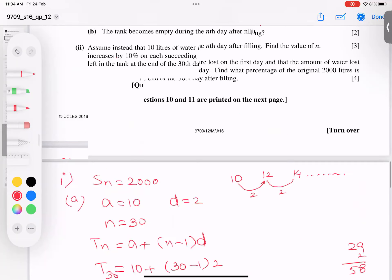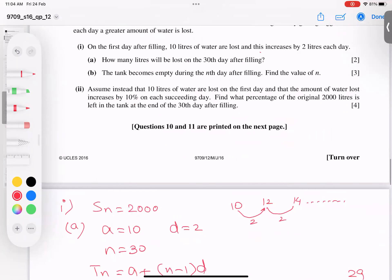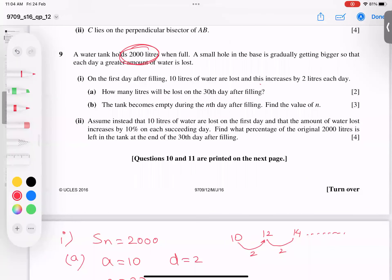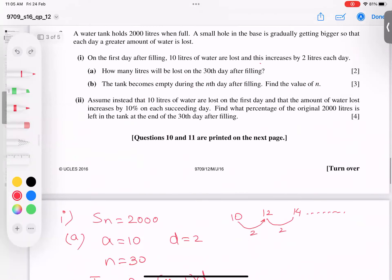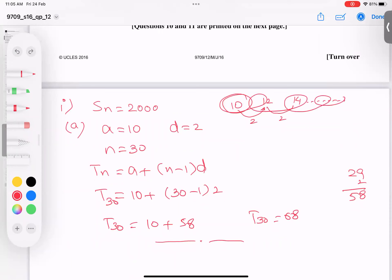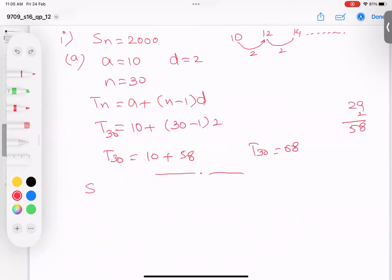But the problem says the total tank becomes empty, meaning all the water will go away. So we should not talk about one day, we need to find the total days. Since Sn = 2000, we use the formula: Sn = (n/2) × (2a + (n-1)d). So 2000 equals (n/2) × (2×10 + (n-1)×2).